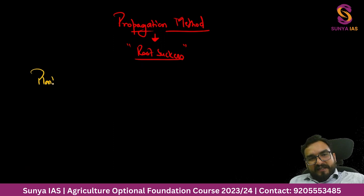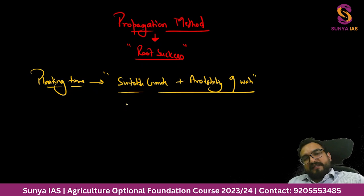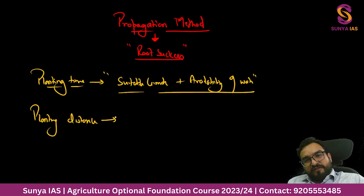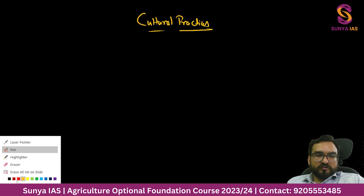Planting time depends on suitable climate and water availability. For banana, you should avoid cultivating in severe winters or during heavy rainfall days. The planting distance is 1.8 meters by 1.8 meters - much closer than mango which is 10 meters by 10 meters. Under cultural practices, we cover nutrient requirements in the form of fertilizer and also the irrigation requirement.